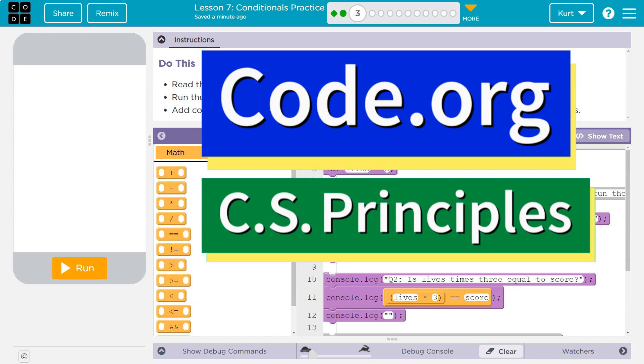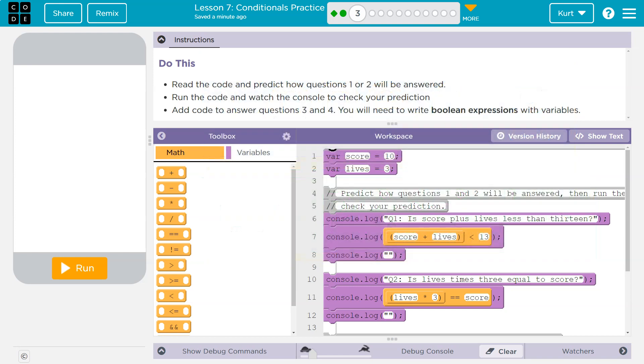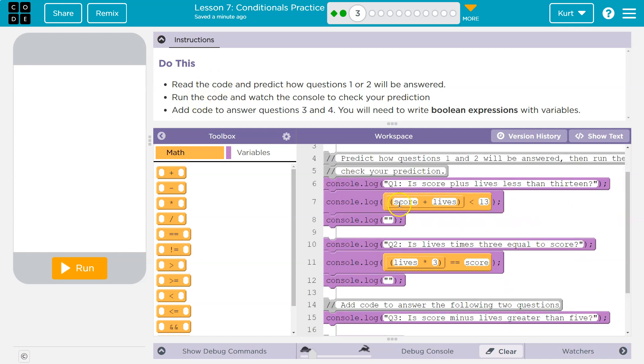This is code.org. Let's see what we're doing. Read the code and predict how questions one and two will be answered. Run the code and watch the console to check your prediction.